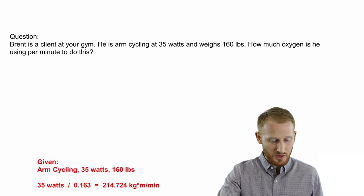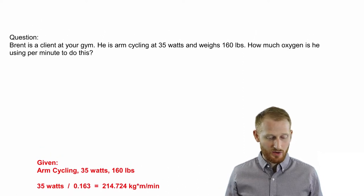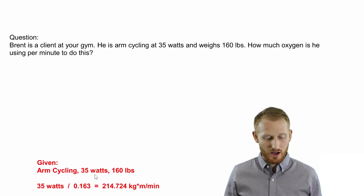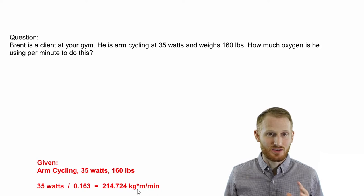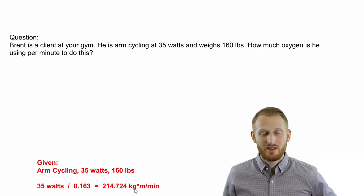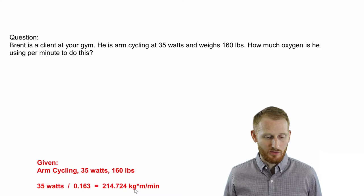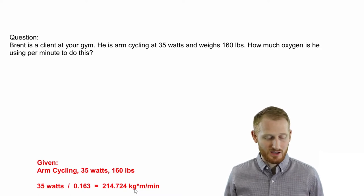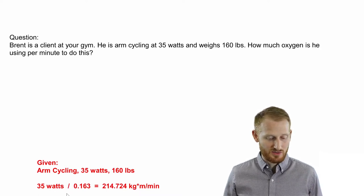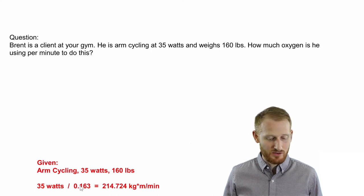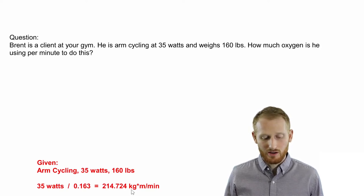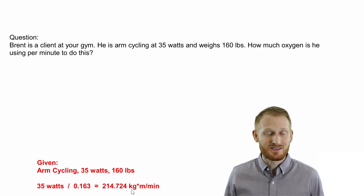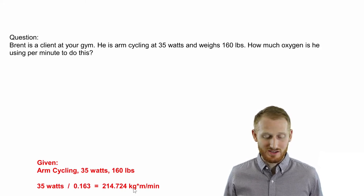So first thing I'm going to do is I'm going to convert from 35 watts to kilogram meters per minute, which is the unit for resistance that the ACSM calculations use for both arm cycling and leg cycling. So 35 watts can just be divided by the constant value, that is 0.163, and that's going to give you 214.724 kilogram meters per minute as the resistance that the arm cycle ergometer is giving him.